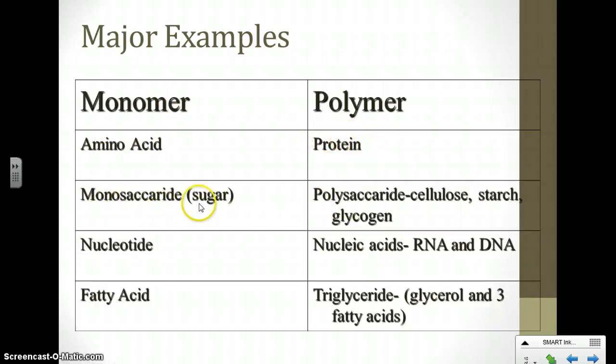If we put together simple sugars, also called monosaccharides, we will create the polymer, a complex carbohydrate called a polysaccharide. And some examples of those are cellulose, starch, and glycogen.